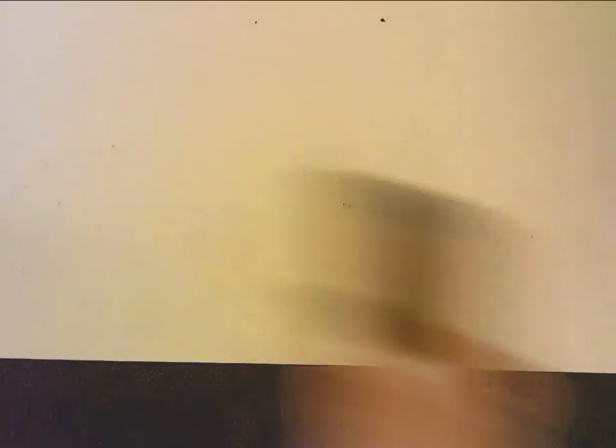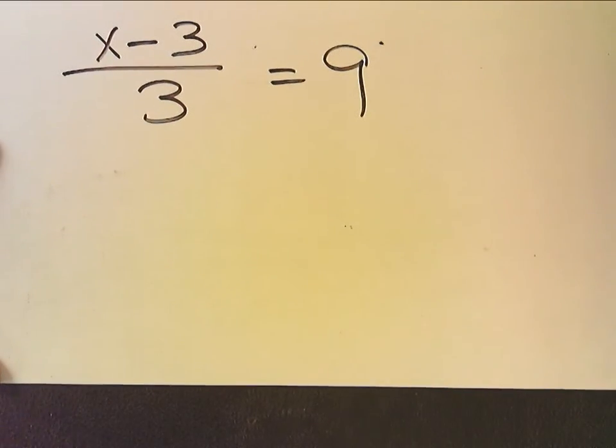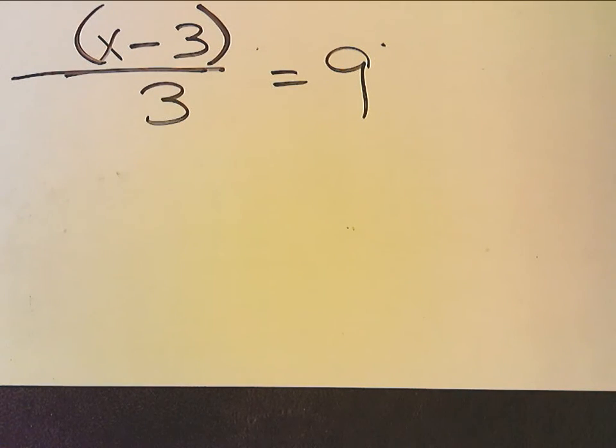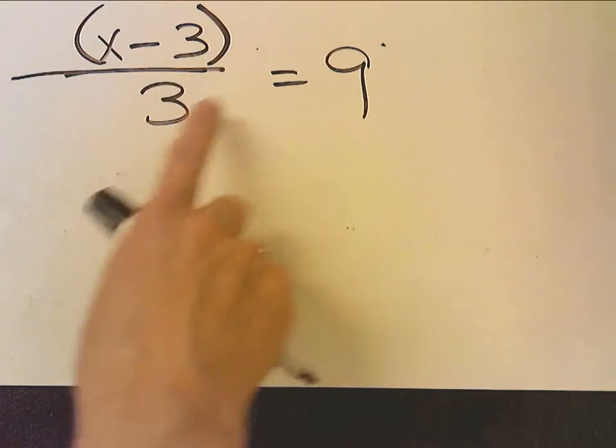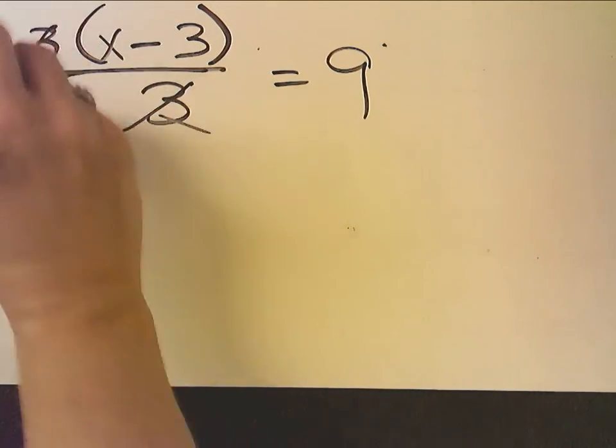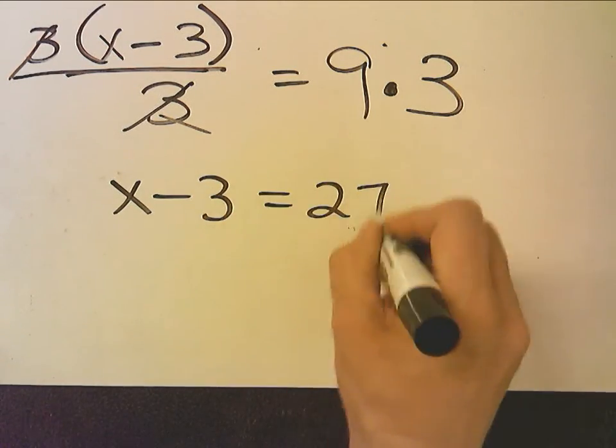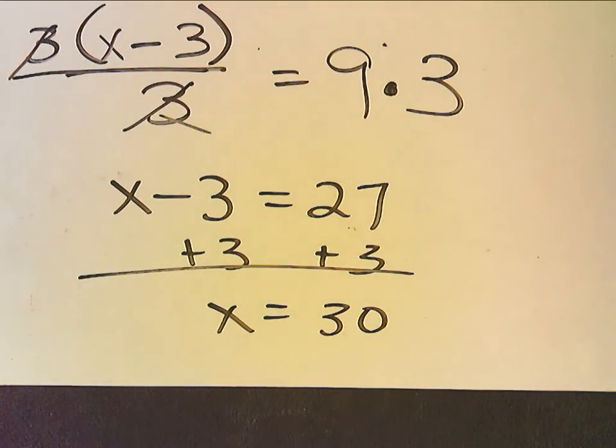So again, stop the video and try to do the next one on your own. The first thing we're going to do is put parentheses around the expression. We're going to realize that x minus 3 is in the parentheses and then divided by 3. So we're going to undo the division first. We're going to undo division by multiplying. We're not going to distribute, because this is crossing out this. I'm going to remember to multiply both sides. x minus 3 equals 27, plus 3, plus 3, x equals 30.